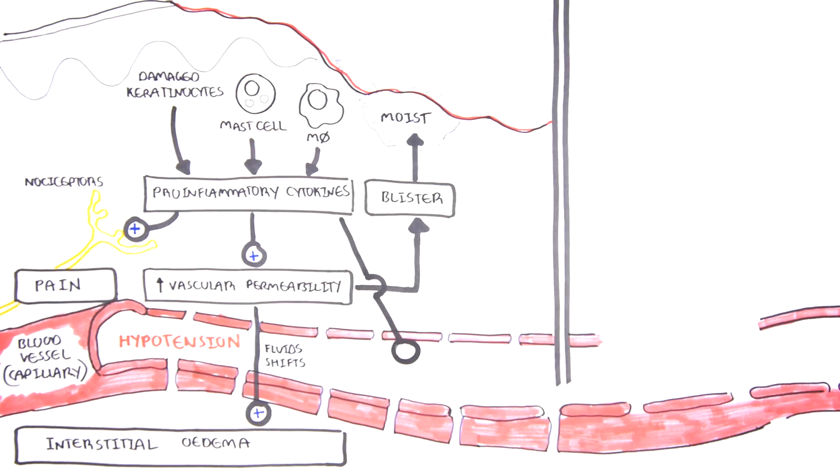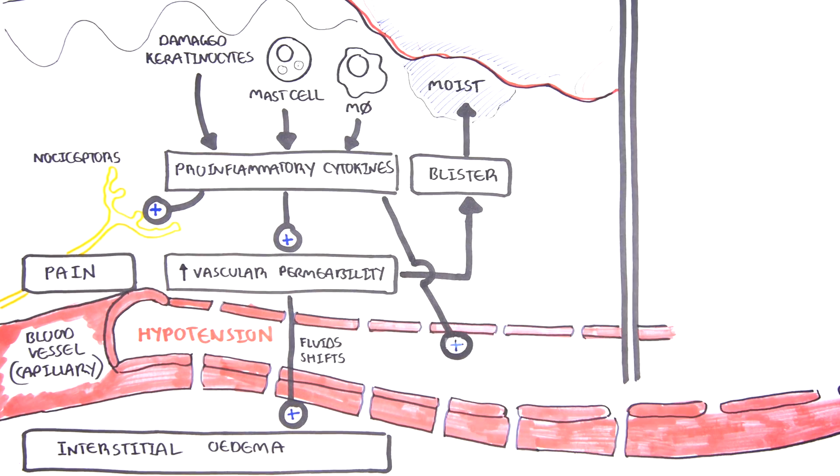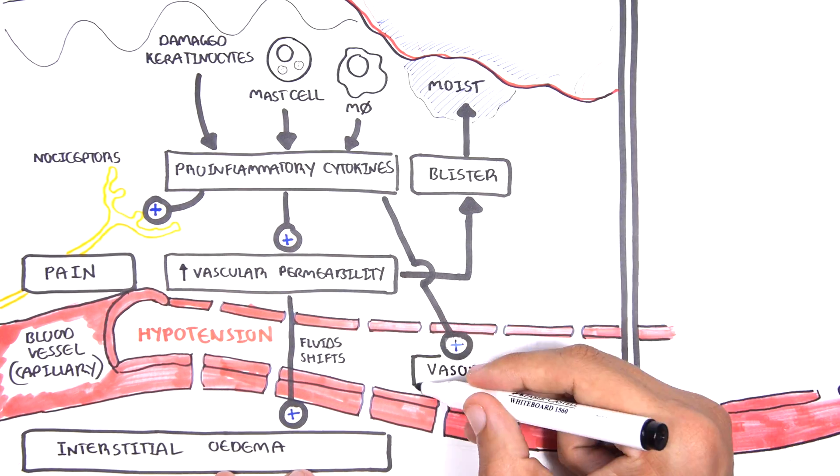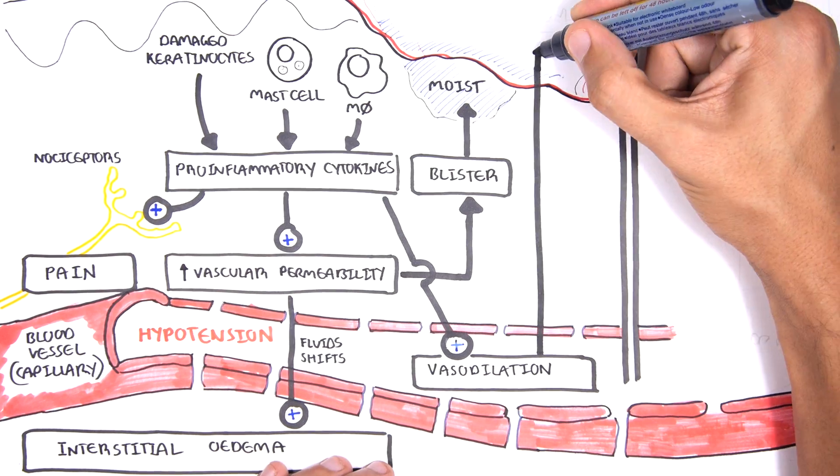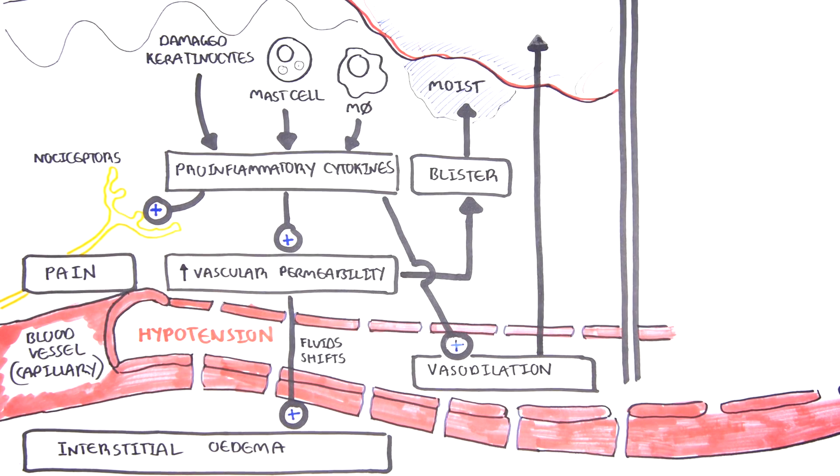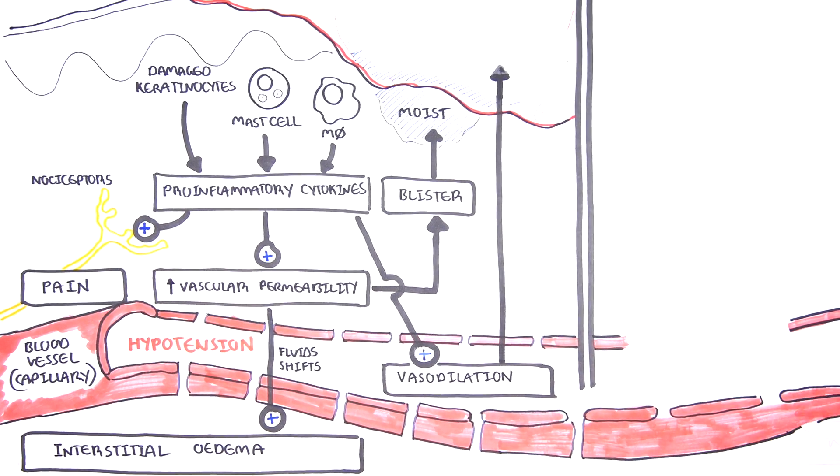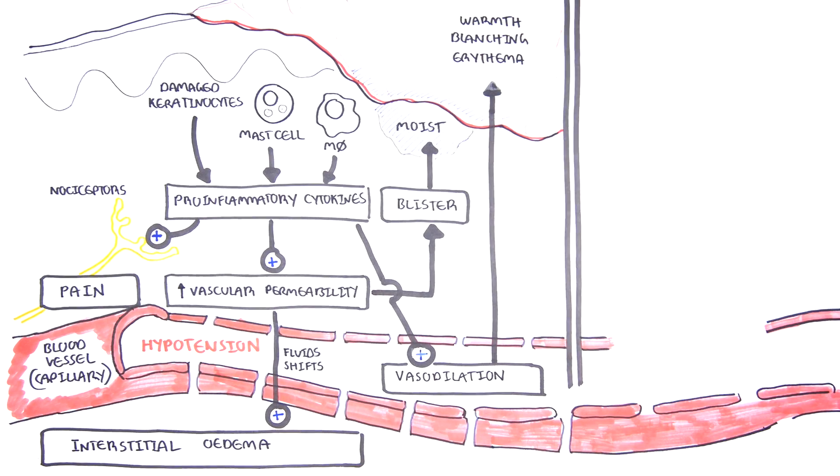The cytokines secreted by the cells above will also cause concurrent vasodilation, causing further hypotension in severe cases. The vasodilation contributes to the warmth in the area, as well as causing blanching of the skin and erythema.